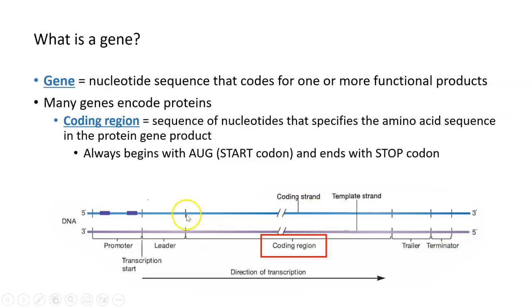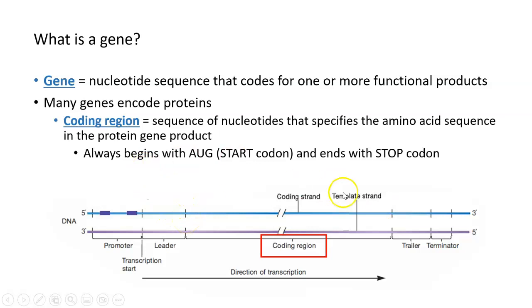The coding region always begins with the same three nucleotides: ATG in the DNA, or AUG when transcribed to mRNA. These three nucleotides are referred to as a start codon because it's the start of translation or protein synthesis. The coding region always ends with three nucleotides that encode a stop codon, so you have a start and a stop sequence marking the beginning and end of the coding region.